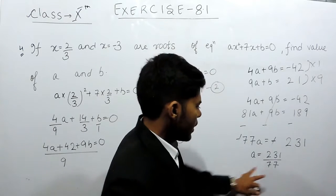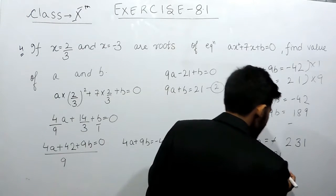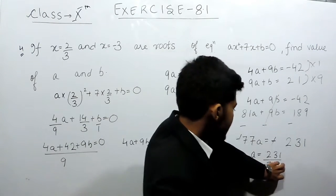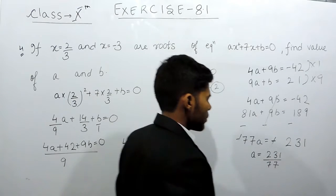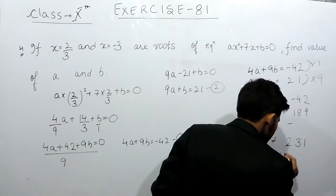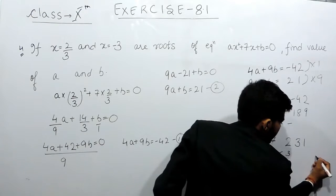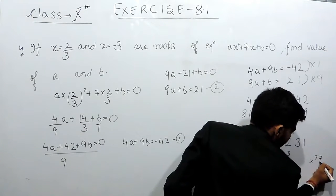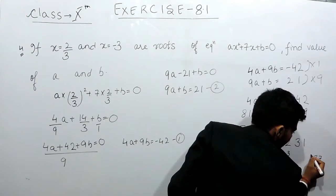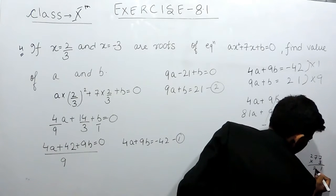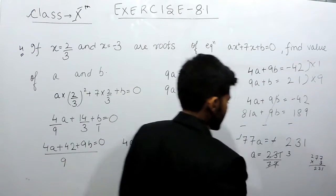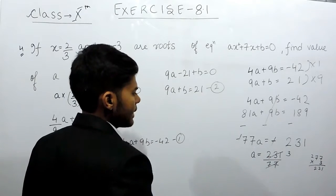What if we multiply 77 by 3, that will be equal to 231. You can do this, 77 multiplied by 3, 7 3 times 21 carried to 7 3 times 21 plus 2 is 23. So a will come out to be 3.